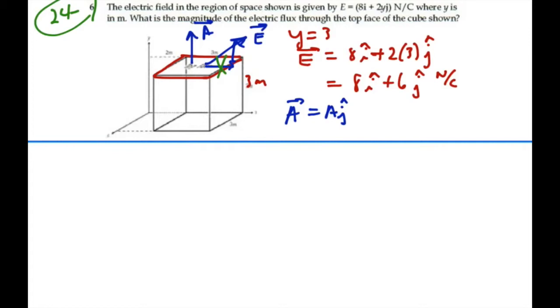Now the area is going to be the area of this square on top, and that has dimensions of 3 by 3. So our area is going to equal 3 squared, or 9 meters squared, and our area vector then will be equal to 9j meters squared.